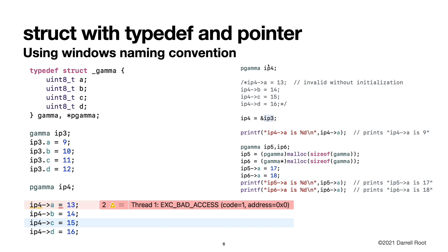Over here, we correct that example. ip4 is a pointer to gamma. And then we make ip4 equal to the address of ip3. So now ip4, the pointer to gamma, is pointing at ip3.